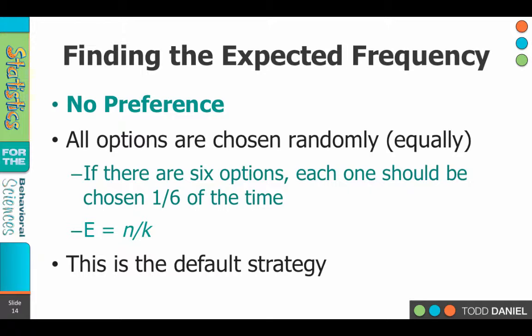So we could make it simple and say if there's six types of soft drinks, then each type of drink should be chosen one-sixth of the time. That's if everything is occurring randomly. Now to put that into mathematics, the E, the expected value, is n divided by k.